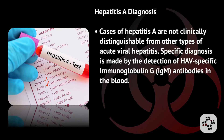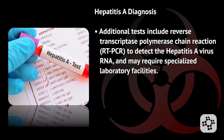Regarding Hepatitis A diagnosis, cases are not clinically distinguishable from other types of acute viral hepatitis. Specific diagnosis is made by the detection of HAV-specific immunoglobulin G antibodies in the blood. Additional tests can include reverse transcriptase polymerase chain reaction to detect the Hepatitis A virus RNA, and may require specialized laboratory facilities to do so.